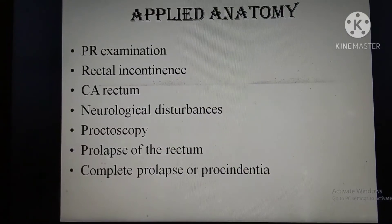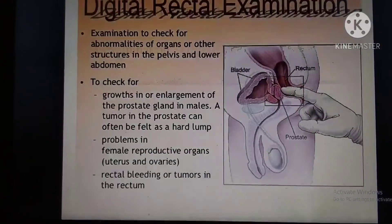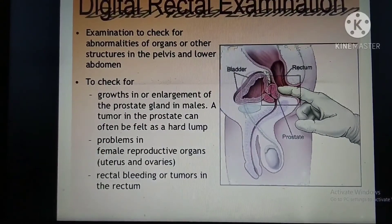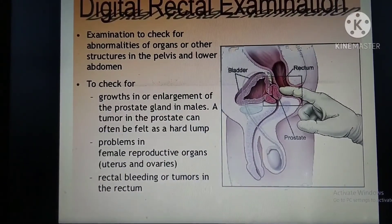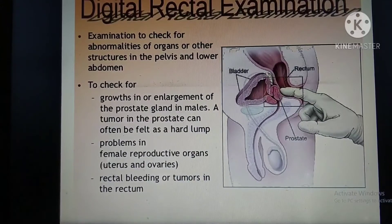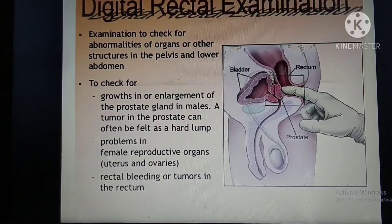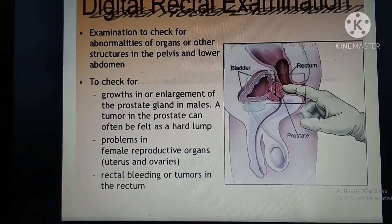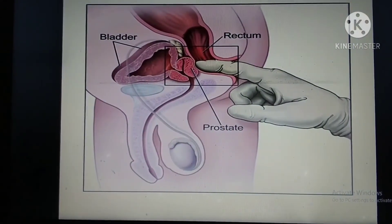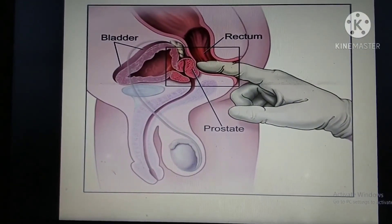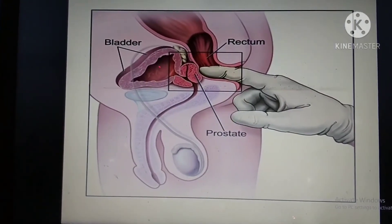The rectal examination is used to check for abnormalities of organs or other structures in the pelvis and lower abdomen, to check for growth or enlargement of the prostate called benign prostatic hyperplasia. A tumor in the prostate can often be felt as a hard lump. It also helps detect problems in female rectal organs, rectal bleeding, or tumor in the rectum. The diagram shows how the PR examination is carried out, with the prostate located below the urinary bladder.